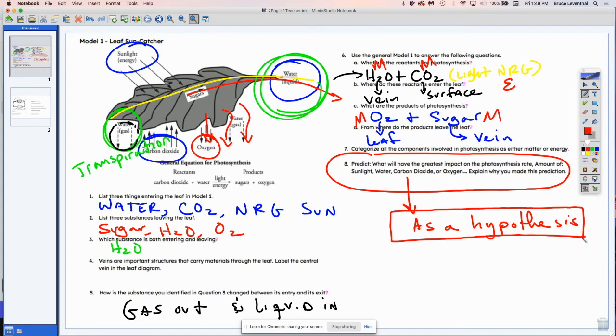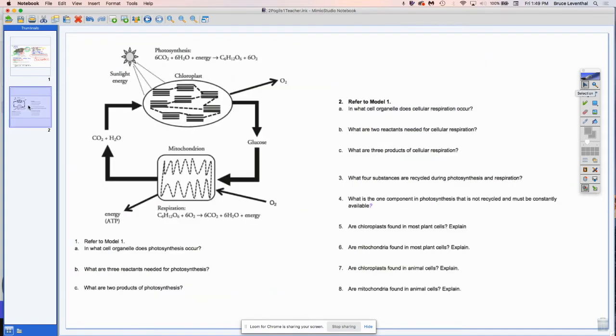All right. So let's look at Pogol number two. In Pogol number two, we are comparing what's happening in the chloroplast and the mitochondria. I want you to notice as we get started here,